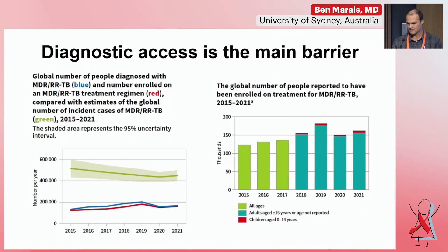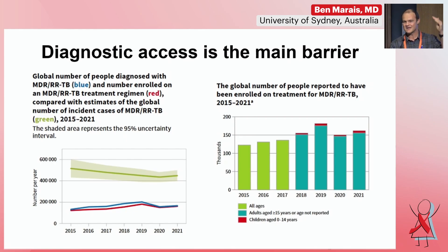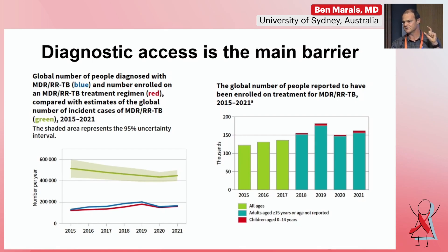Looking at the numbers available: in blue, the number of people diagnosed with drug-resistant TB globally; in red, the number treated. There is a very small treatment gap — if you get diagnosed, in most instances you get treated. But diagnosis is only available in specialist centers, so there is a massive diagnostic gap. Looking at the right-hand side, only a very small fraction of those treated for MDR-TB are children, despite children representing around 10% of all TB cases globally.